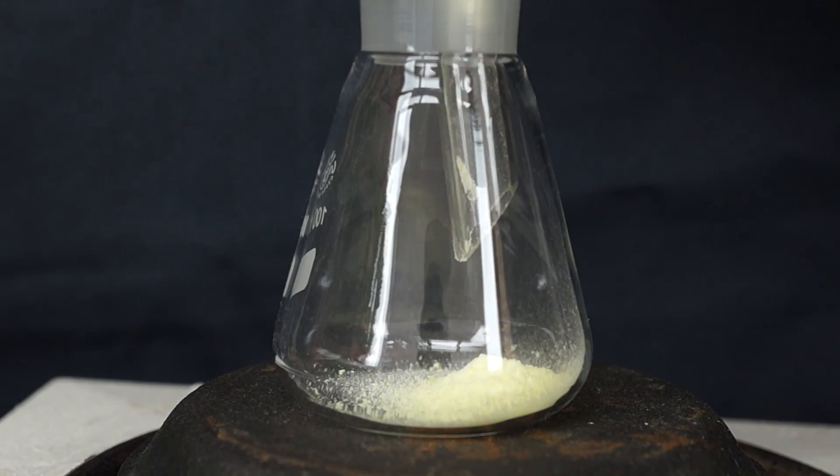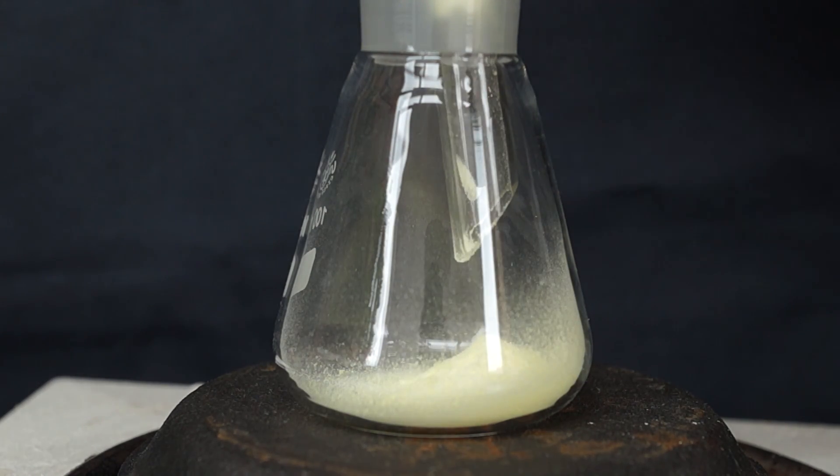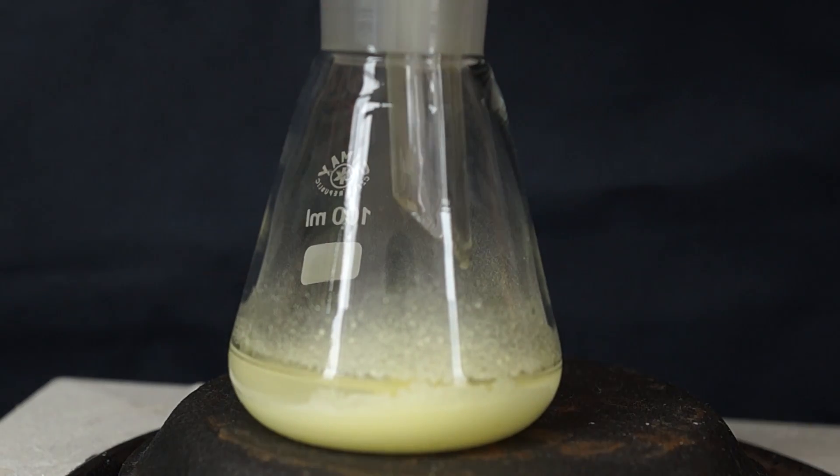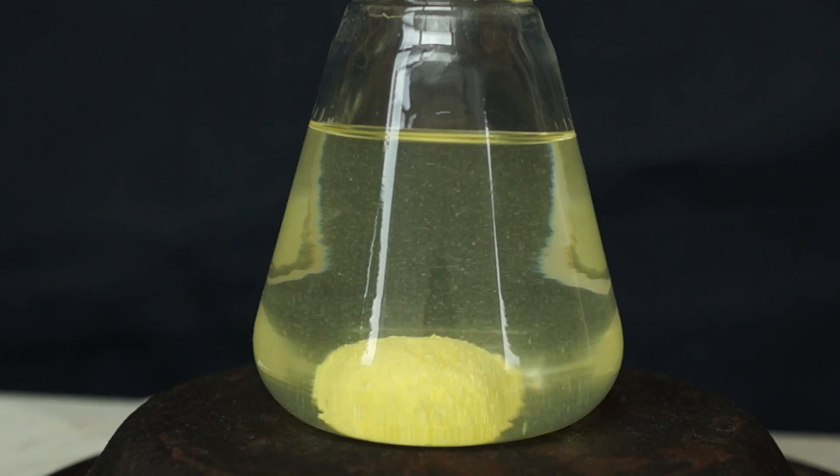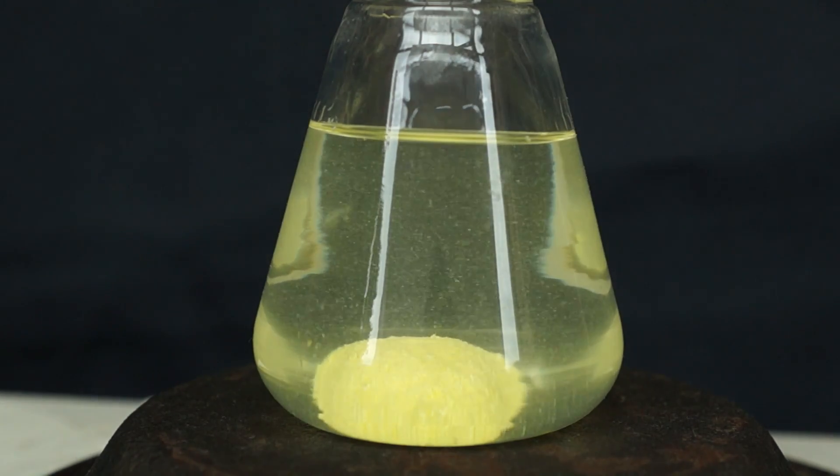Let's take a flask and fill it with 10 grams of crushed sulfur. Then we will need to pour about 100 ml of toluene into the flask and turn the stove on to heat up our mix.